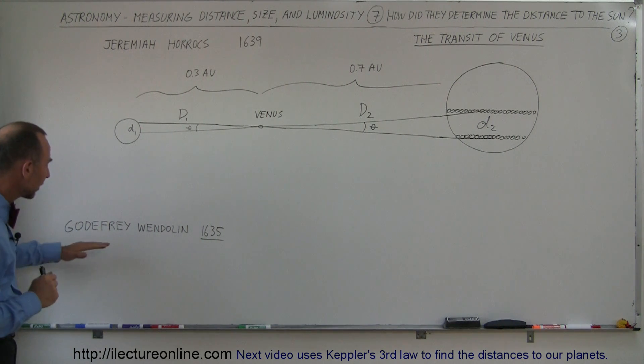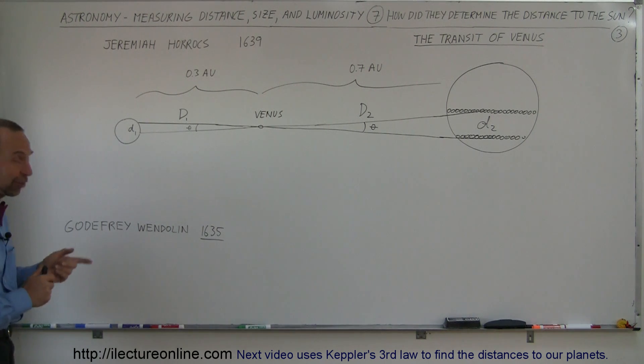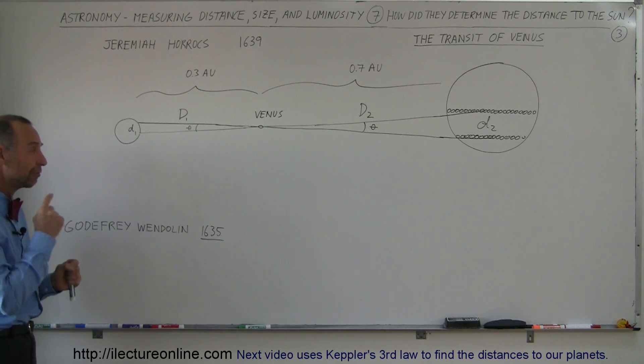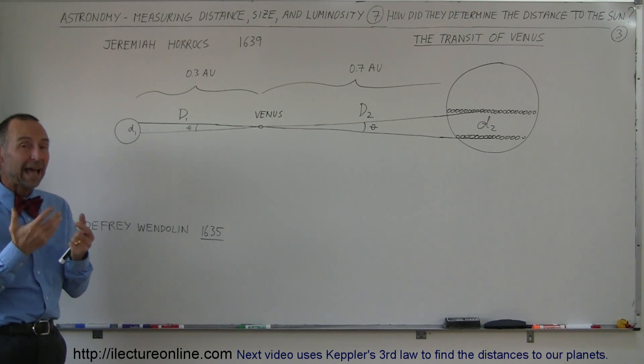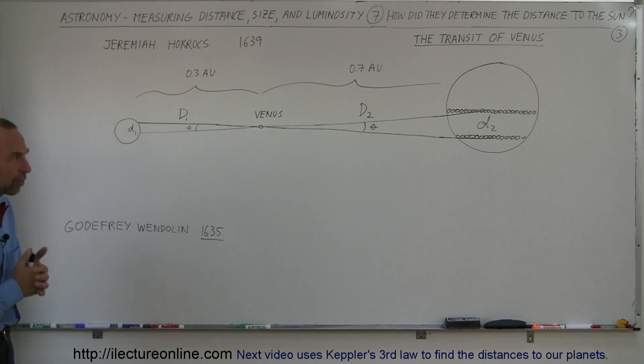And then it turned out that Godfrey Wendelin, a Flemish astronomer, came up with the idea of using a telescope to take the same measurements. And from that we got a much better, more accurate measurement, which now got it to within about half of the true distance, about 45, 50 million miles instead of 93 million miles.